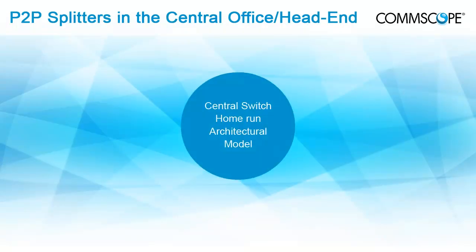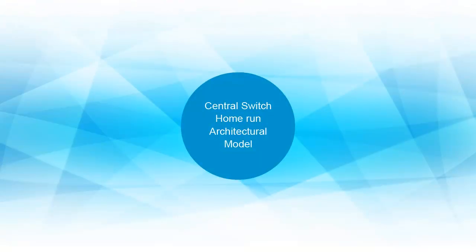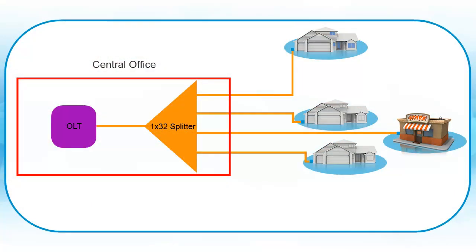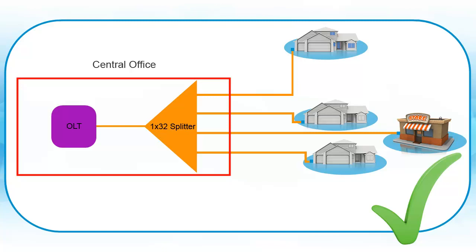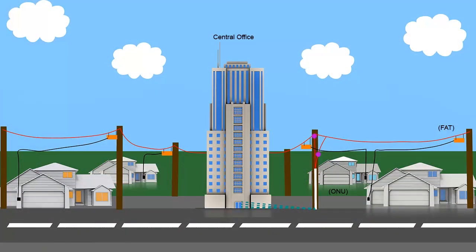We will look at the Central Switch Home Run Architectural Model first. With this way to deploy FTTH services, a 1-to-32 splitter is located inside the Central Office with a single fiber directly routed from the splitter to each subscriber. From a pure efficiency standpoint, this is the best way to deploy FTTH services, with each subscriber having a dedicated fiber from the Central Office or head-end, giving the service provider a lot of flexibility in what and how services are deployed. Also, there are no network interface points between the CO and the subscriber, so all maintenance is done within the Central Office.